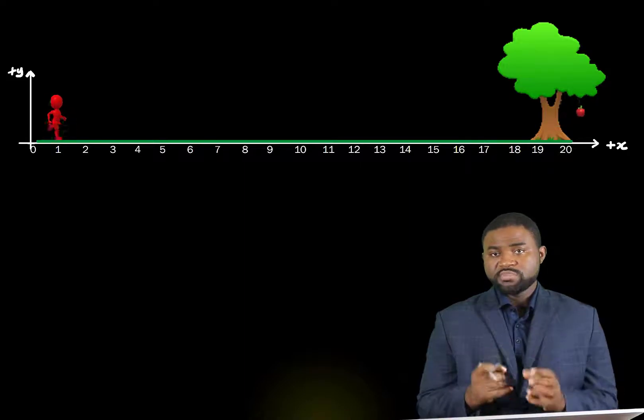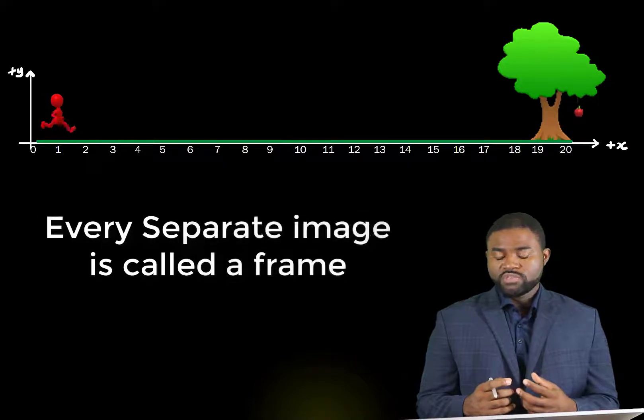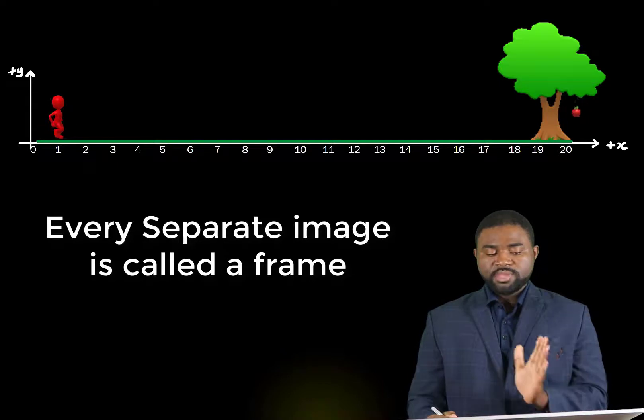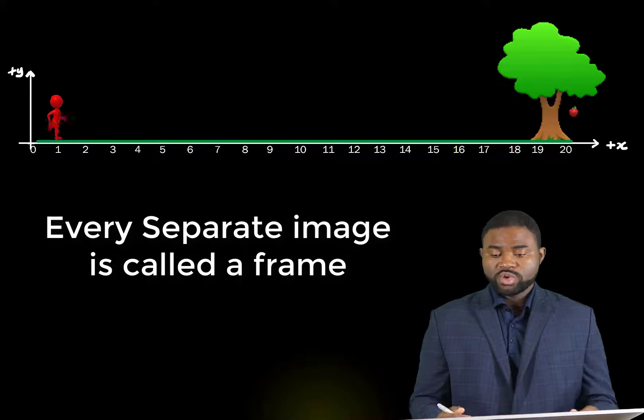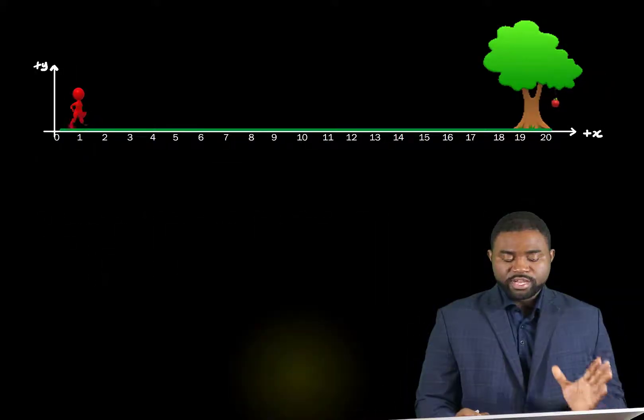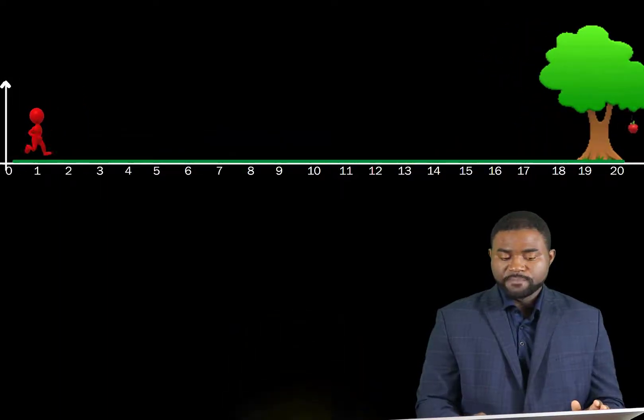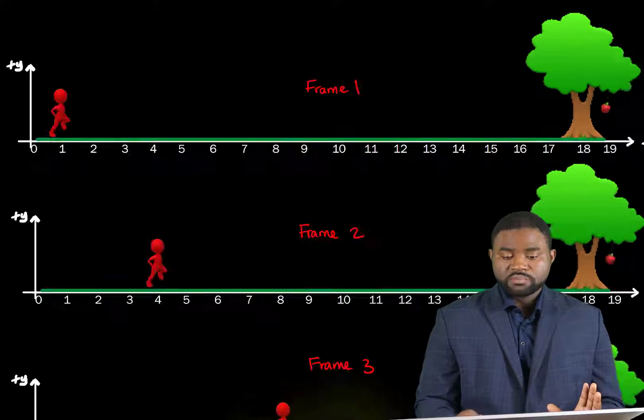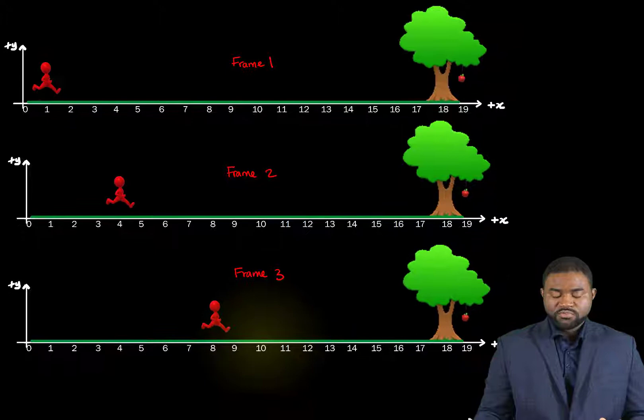Now every separate image is what we call a frame. So an easy way is for us to take separate images at equal time intervals of this guy running to the right. And let's see what we can make of it. So if we take separate images at different positions of him as he runs to the right, it will result in us producing these frames.